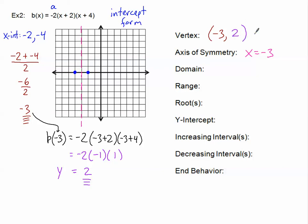So our vertex is at (negative 3, 2), which is up here — confirming the parabola opens downward because a is negative. Since a is negative 2, when we input 1 we go down 2, and when we input 2 we go down 8 (instead of the usual 4, it's multiplied by 2). We plot those symmetrical points on both sides and draw our downward-opening parabola.